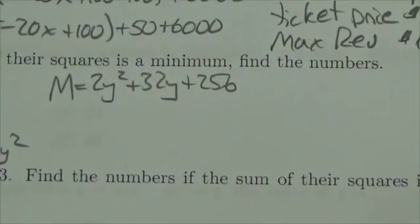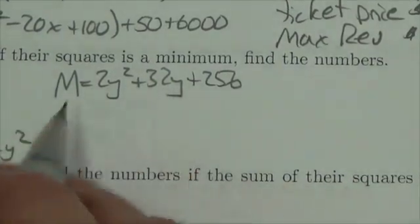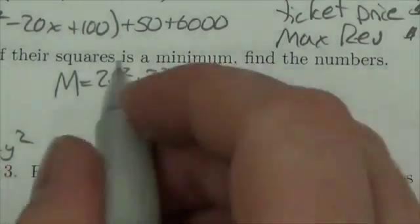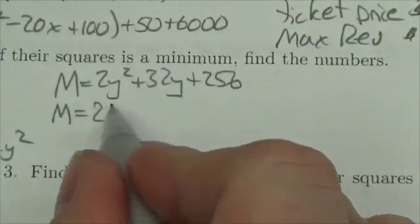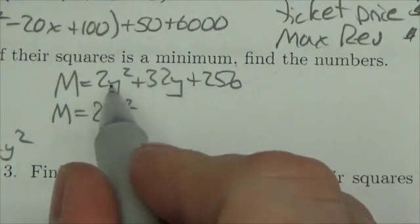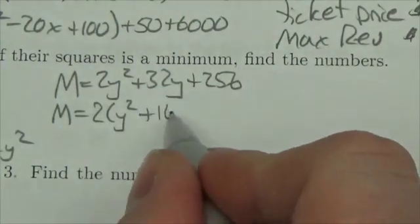That's what's equivalent to m here. I want to complete the square on this because I want to solve for the vertex here. So first thing I'm going to do is ignore the 256. I'm going to take the 2 out of this quadratic term and the linear term here to get positive 16.